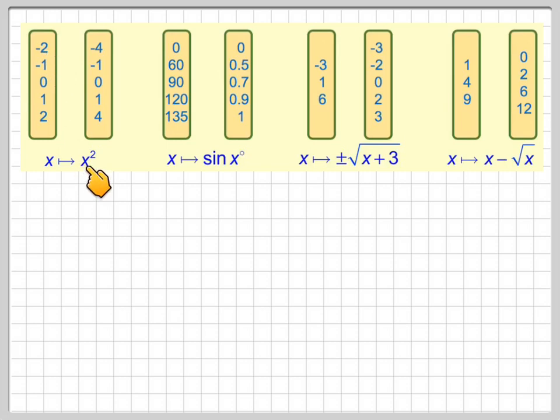Minus 2 squared will give you 4. So what we do, we draw a line from minus 2 to 4. Now that I've shown you the first one, you might want to stop the video and try the others for yourselves.